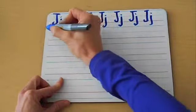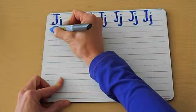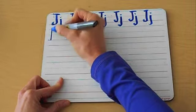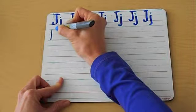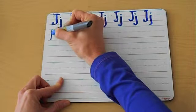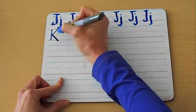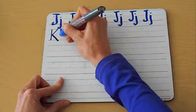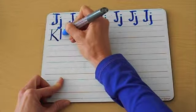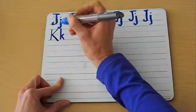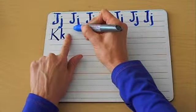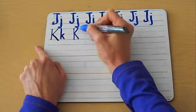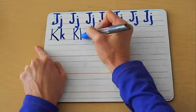Now we're going to go ahead and do the K. From the top, one. From top to bottom, blue to red. Now watch this — to the broken line and back down. Lowercase K is still a tall letter. To the broken line and down. One finger space. Uppercase K, very tall letter.